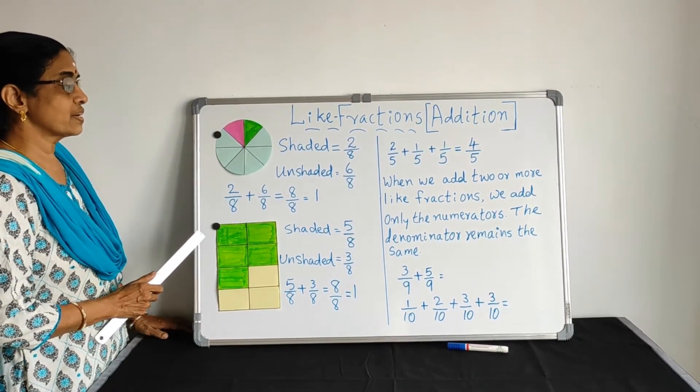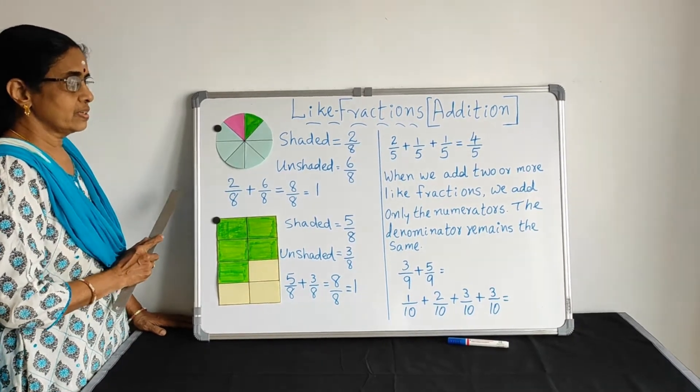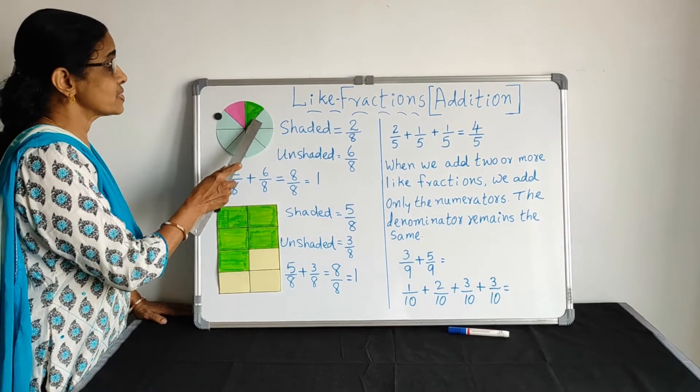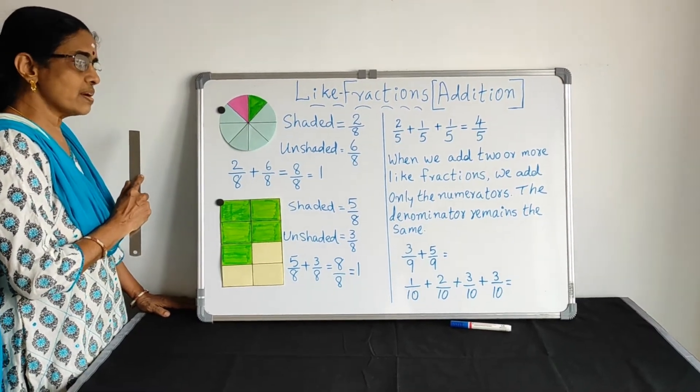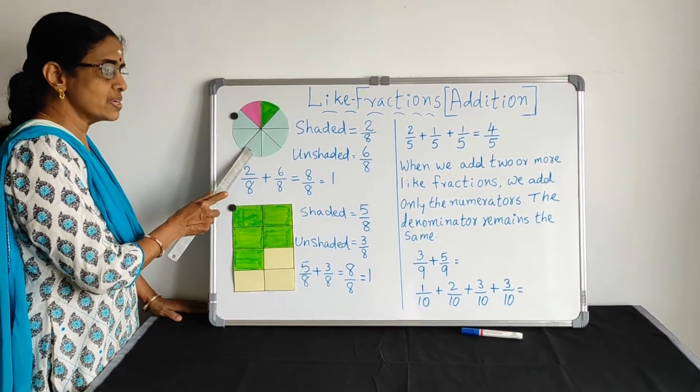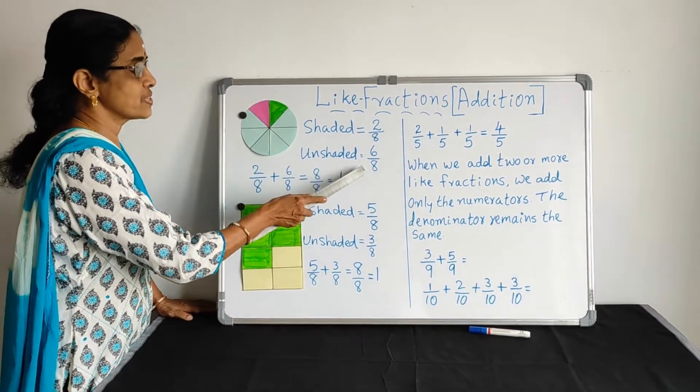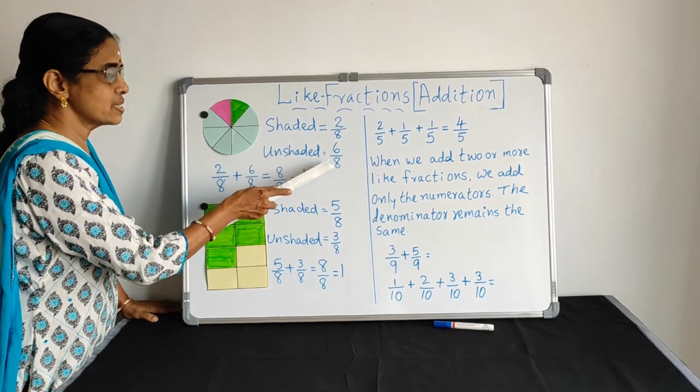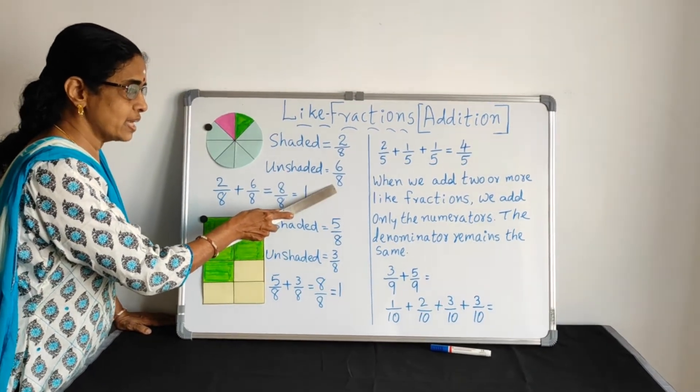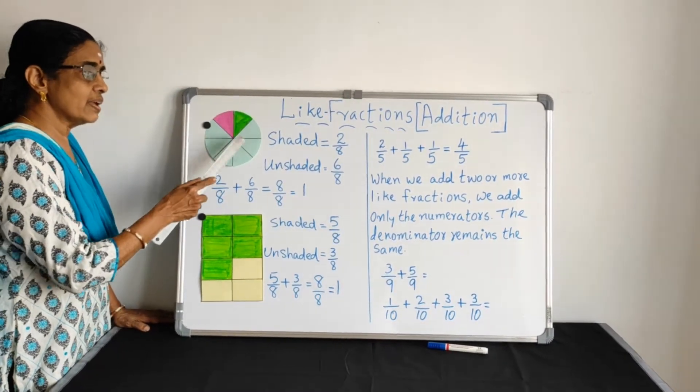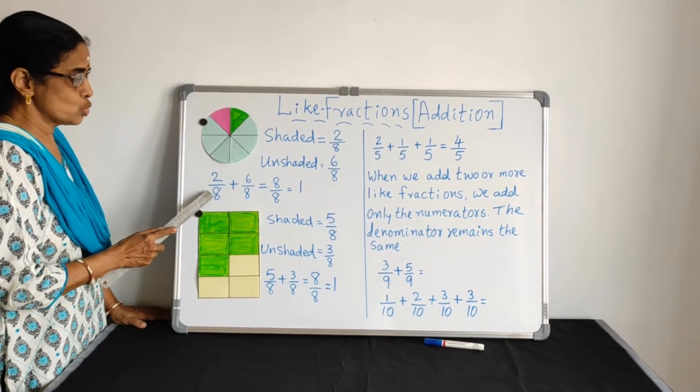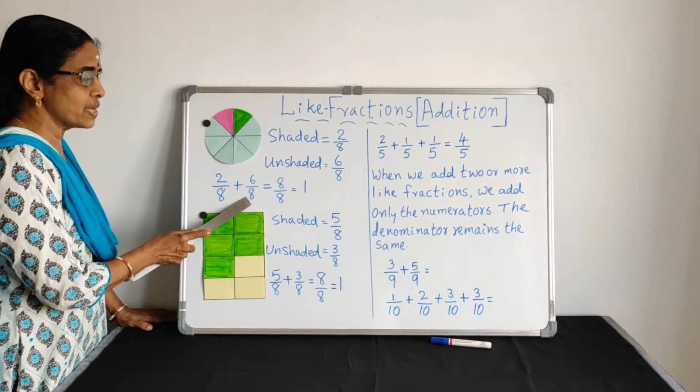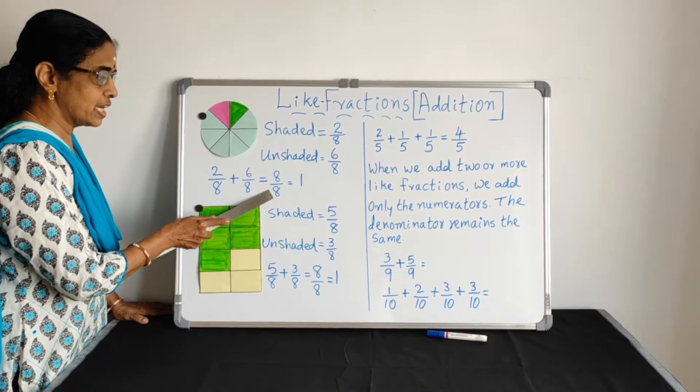How many parts are unshaded? There are 1, 2, 3, 4, 5, 6. 6 parts not shaded. That means unshaded. So it represents 6 by 8. Shaded 2 by 8, unshaded 6 by 8. Totally there are 8 equal parts. So 2 by 8 plus 6 by 8, shaded plus unshaded, we are getting 8 by 8.